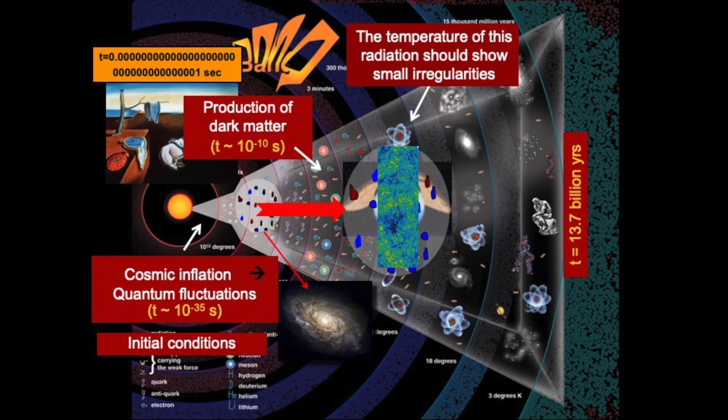When the universe was born, it found itself with an excess of energy — an energy that physicists call vacuum energy. This vacuum energy caused the universe to become unstable and to expand very rapidly for a very brief period of time. This period of very, very rapid, exponential expansion is known as cosmic inflation, during which the universe shook off this additional quantum vacuum energy that was making it unstable.